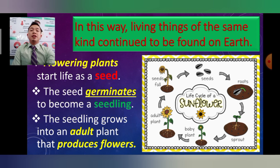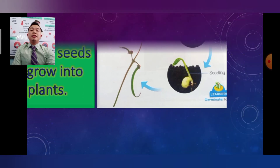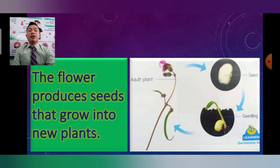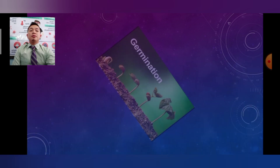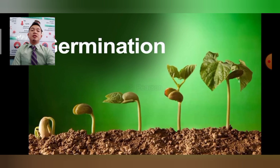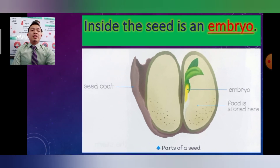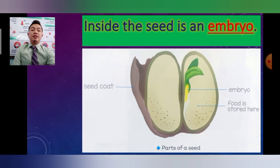The flower produces seeds that grow into new plants. So the seed turns into a seedling and then an adult. Now let's talk about germination. Inside the seed is an embryo — the same as with human beings. The embryo is shown in yellow, the stored food of the seed is also there, and the seed coat is the outer brown layer. These are the parts of the seed.